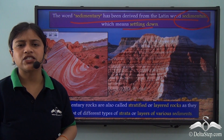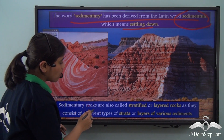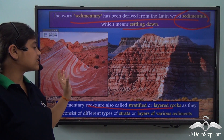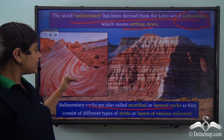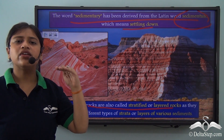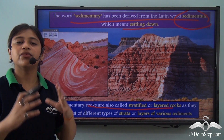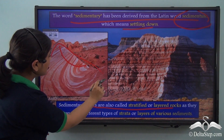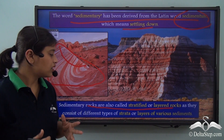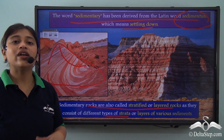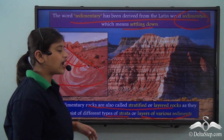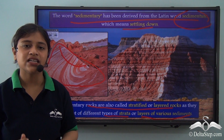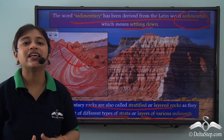Sedimentary rocks are called stratified or layered rocks. As can be seen in this picture, each layer forms a different strata that comes together to form the rock as a whole. Different layers together have given rise to this sedimentary rock. These rocks consist of different types of strata or layers of various sediments. From the very word sedimentary we mean settling down, and they are stratified, meaning layered.